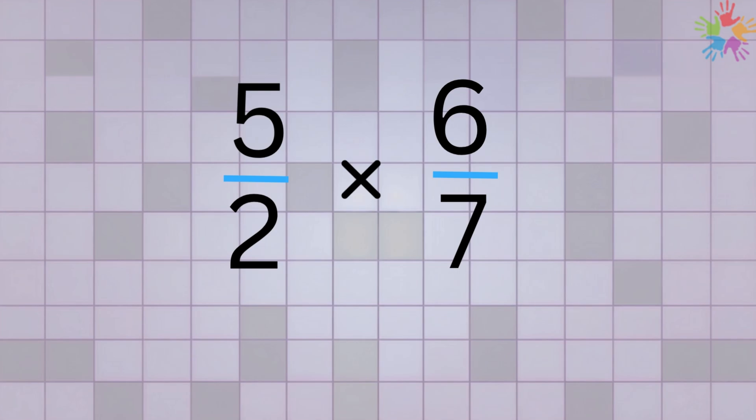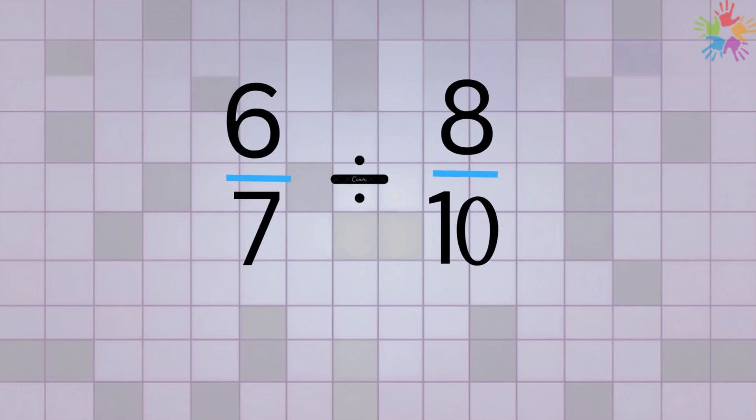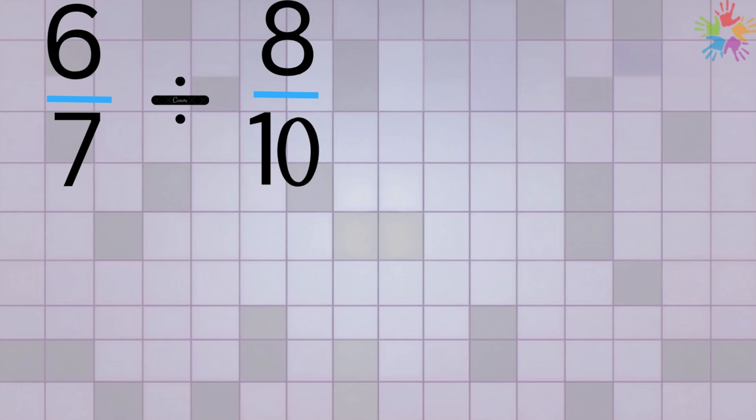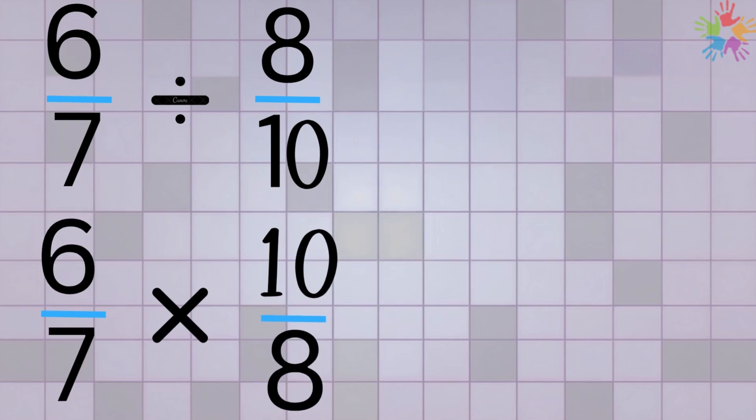As always, let's look at a couple of examples to see how this works. Let's try this one: 6 over 7 divided by 8 over 10. First, we need to rewrite the problem. Instead of dividing by 8 over 10, we'll multiply by its reciprocal. The reciprocal of 8 over 10 is 10 over 8. So our new problem is 6 over 7 multiplied by 10 over 8.